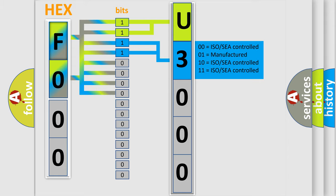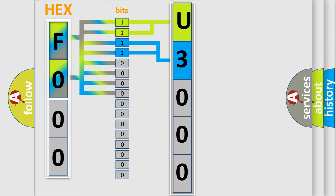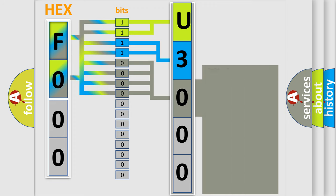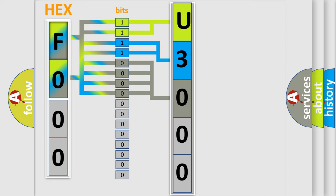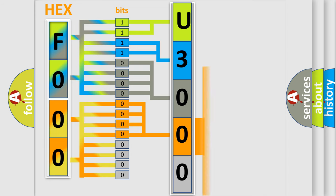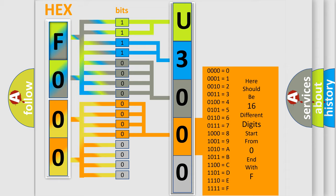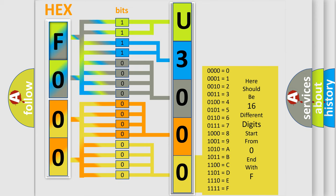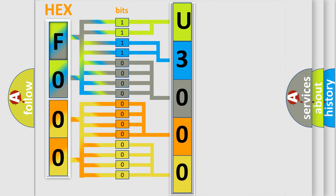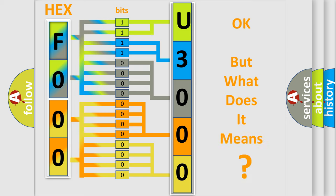The last bits of the first byte define the third character of the code. The second byte is composed of a combination of eight bits. The first four bits determine the fourth character of the code, and the combination of the last four bits defines the fifth character. A single byte conceals 256 possible combinations. We now know in what way the diagnostic tool translates the received information into a more comprehensible format.